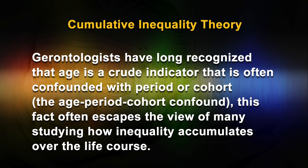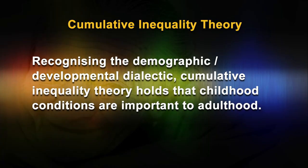Gerontologists have long recognized that age is a crude indicator that is often confounded with period or cohort — the age-period-cohort confound. This fact often escapes the view of many studying how inequality accumulates over the life course. Aging is highly dependent on social context, reflecting gene pools and social organization at a given point in history. Recognizing the demographic-developmental dialectic, cumulative inequality theory holds that childhood conditions are important to adulthood. We now have compelling evidence that childhood conditions structure the life course.